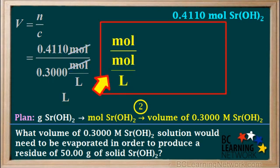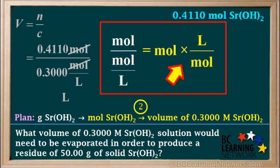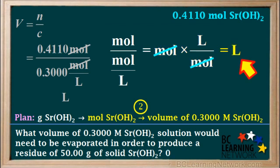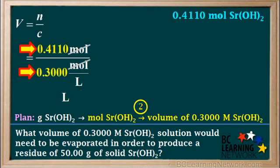To help you understand why liters is the unit for the answer, we'll write the unit moles divided by moles per liter. When dividing by a fraction, we can invert the denominator and multiply, so this is equal to moles times liters over moles. We cancel the moles and we're left with the unit liters on top, which will be the unit for our answer. To calculate the answer, we go 0.4110 divided by 0.3, and we get 1.370 liters. Since we had no less than four significant figures throughout the calculations, the answer has four significant figures.